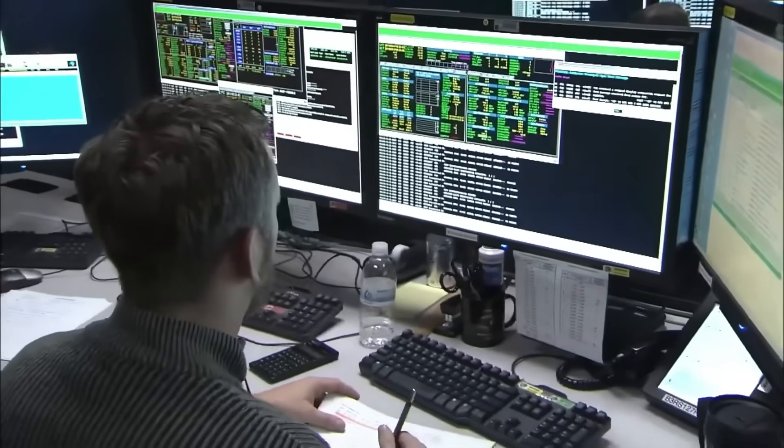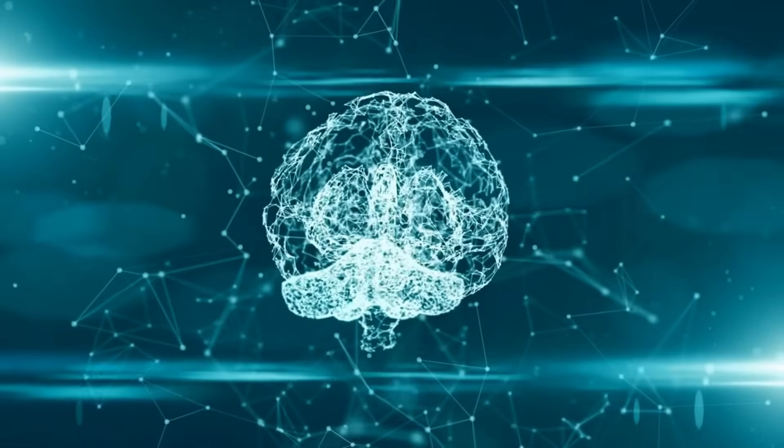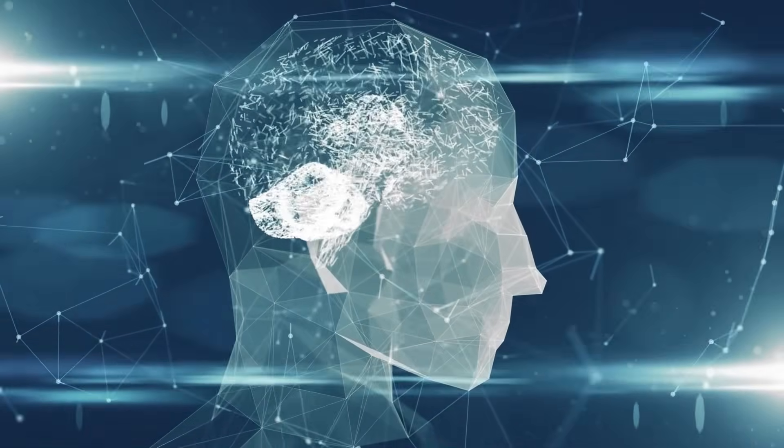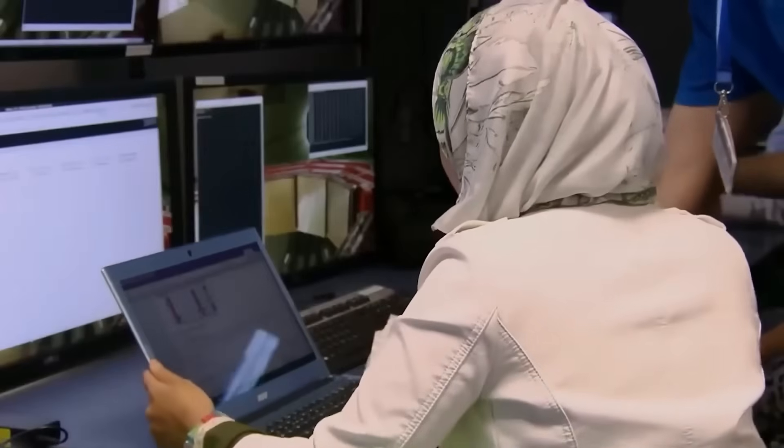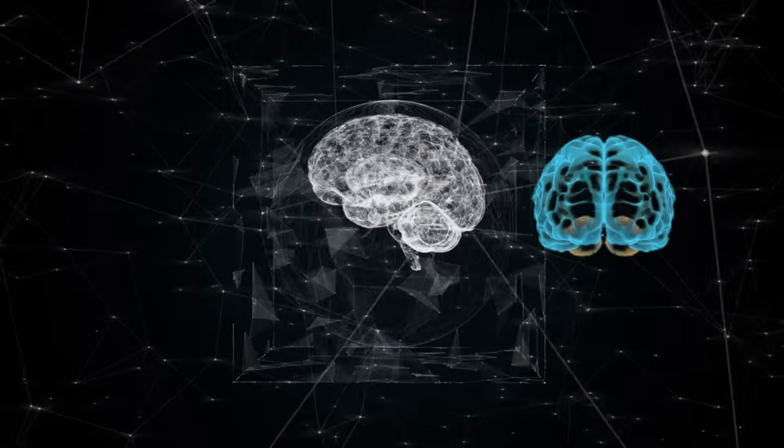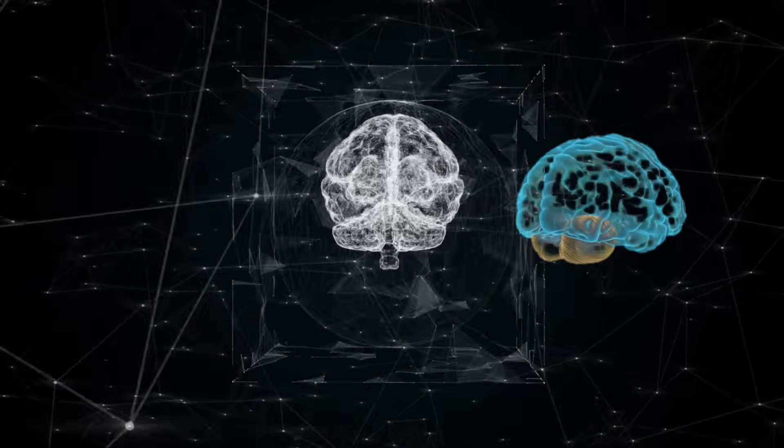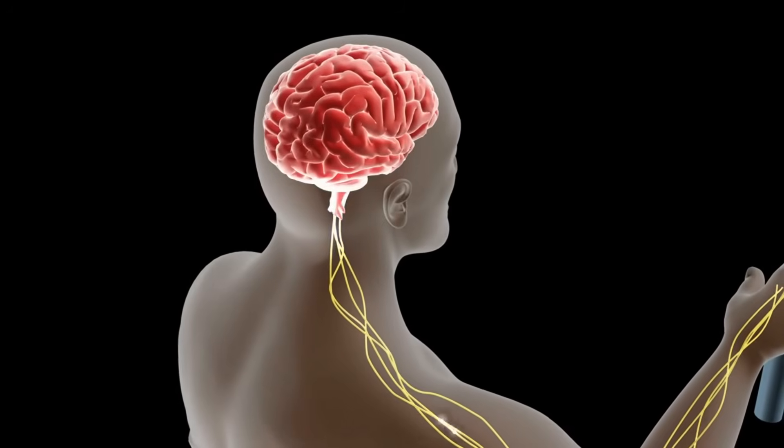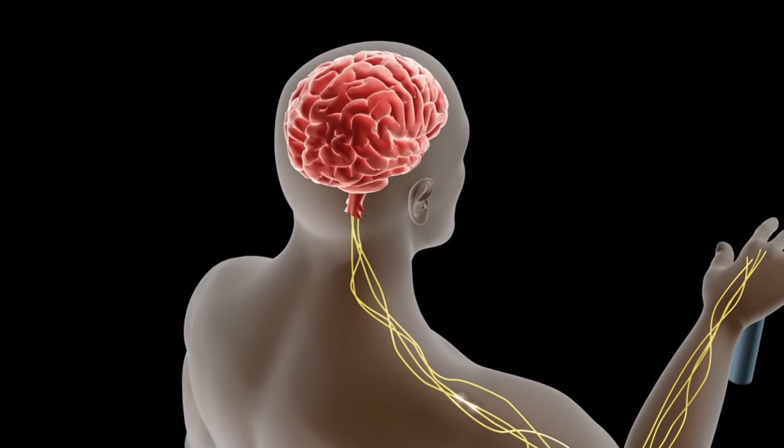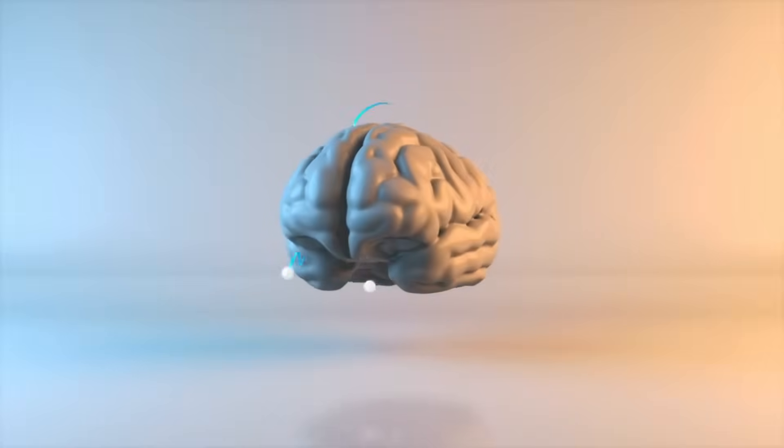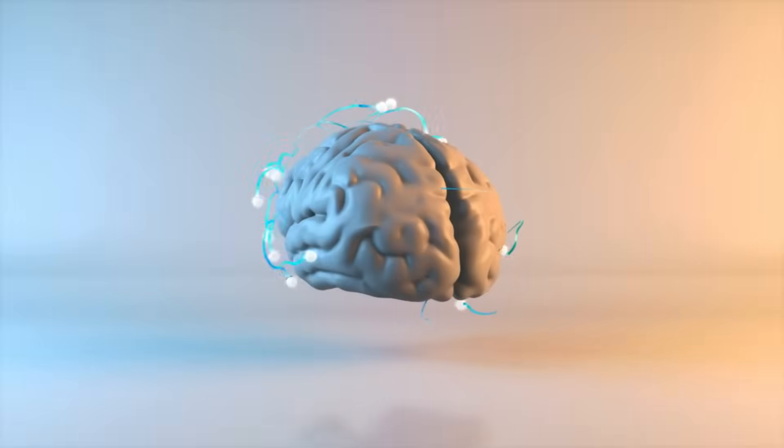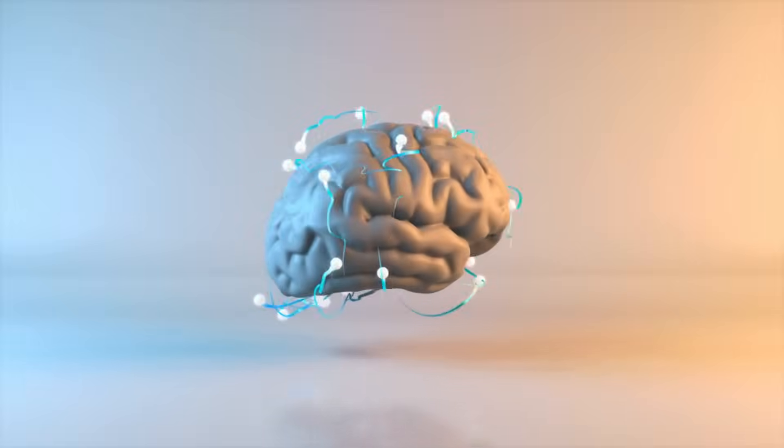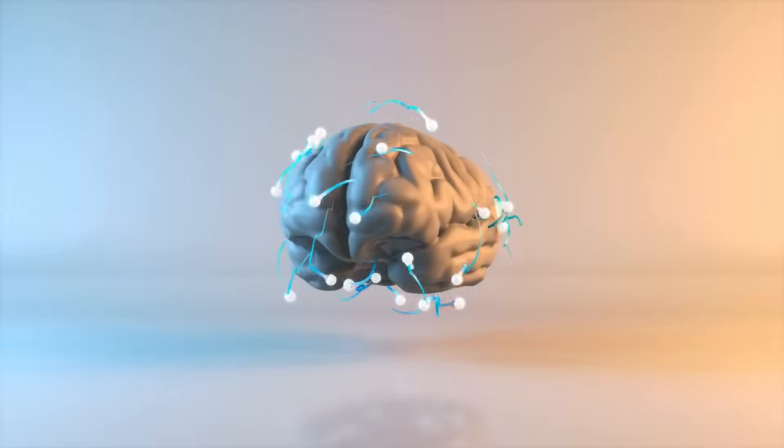The experiments involved highly controlled settings, where subjects' brain activities were recorded simultaneously in different parts of a laboratory. Researchers discovered that, under certain conditions, the neural activities of two individuals began to show a degree of synchronization that far exceeded what could be accounted for by known neurological processes. This synchronization hints at a potential quantum connection, a sort of entanglement between the participants' brainwaves.